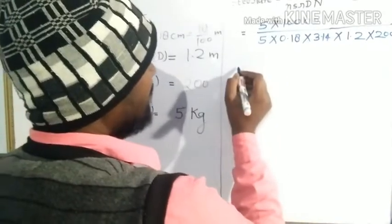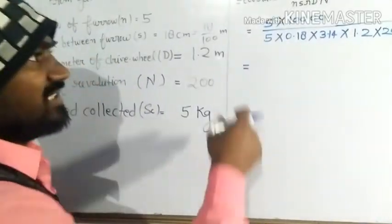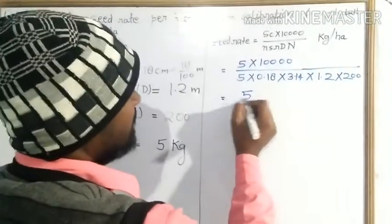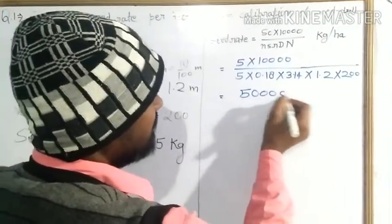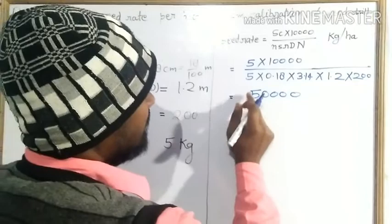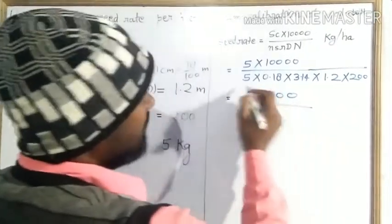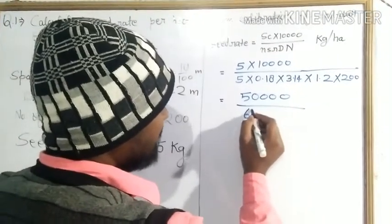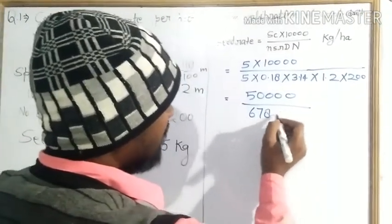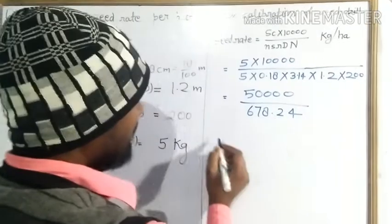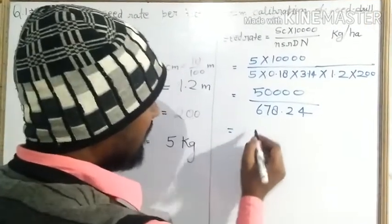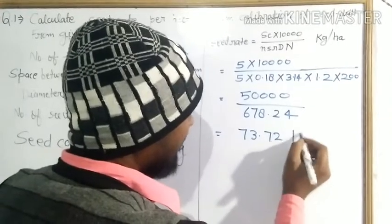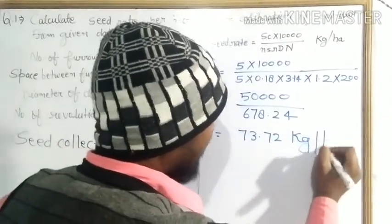When we calculate by multiplying these all values, it will be 50,000 and this value when we calculate it will be 678.24. And when we calculate this all value it will be 73.72 kg per hectare.